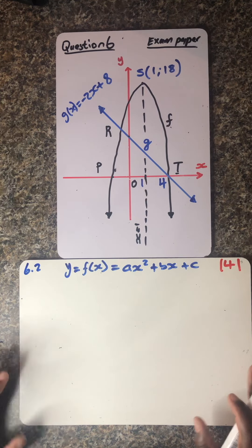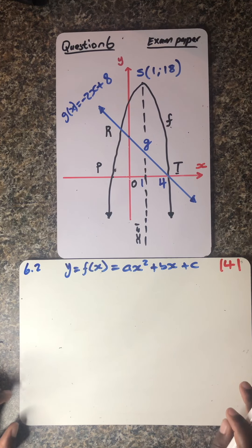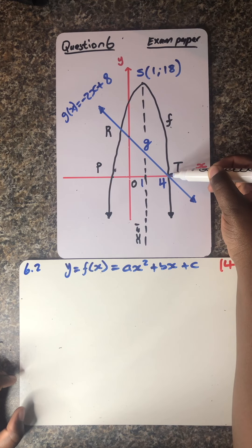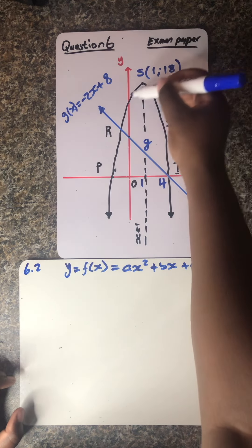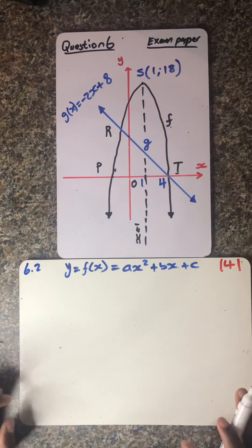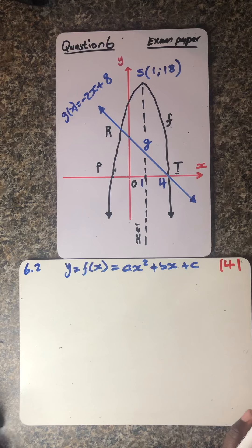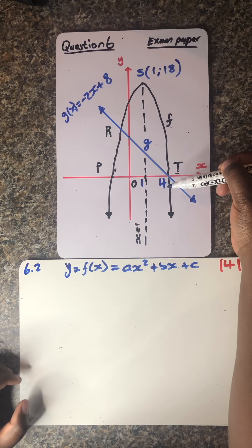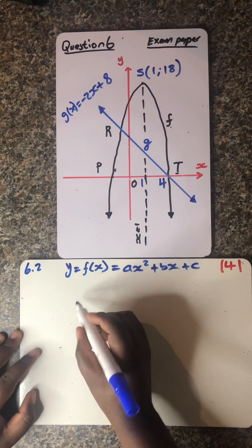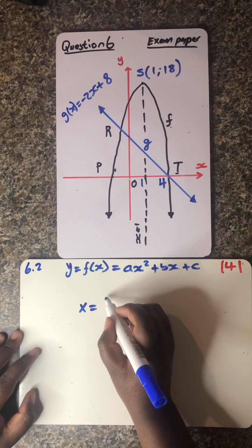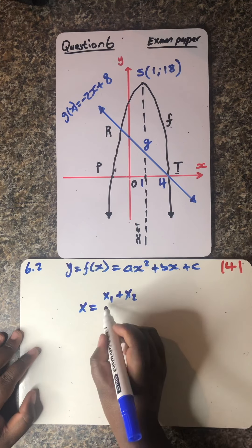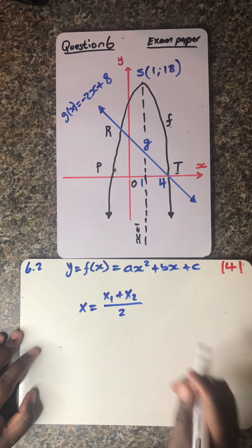Ladies and gentlemen, can we just perform a very quick calculation? Remember guys, if you can have the intercepts of a parabola — the two intercepts — and just one point along that graph, you can easily solve this question. The reason why I'm saying this is because we can easily find that point. Do you remember the midpoint formula? x is equals to x1 plus x2 over two.